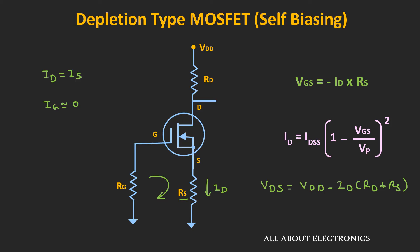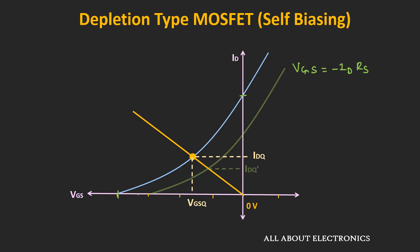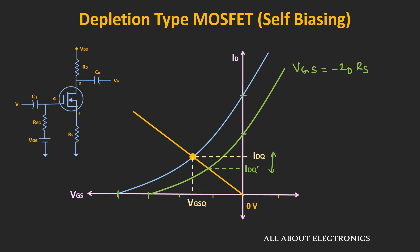Graphically, the blue curve shows the transfer curve for the MOSFET. Since VGS equals minus Id times Rs, the load line passes through the origin, and its intersection with the transfer curve gives the operating point. Comparing maximum and minimum curves for IDSS and VP, the maximum variation in drain current is lower compared to the fixed bias configuration. This variation can be reduced further by using voltage divider biasing, where adding a fixed gate voltage reduces the slope of the load line.